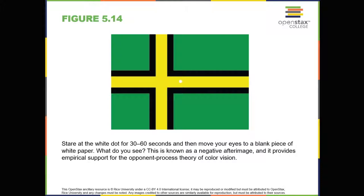Depth perception. Our ability to perceive spatial relationships in three-dimensional space is known as depth perception. With depth perception, we can describe things as being in front, behind, above, below, or to the side of other things. Our world is three-dimensional, so it makes sense that our mental representation of the world has three-dimensional properties. We use a variety of cues in a visual scene to establish our sense of depth. Some of these are binocular cues, which means they rely on the use of both eyes. One example of a binocular depth cue is binocular disparity, the slightly different view of the world that each of your eyes receives.